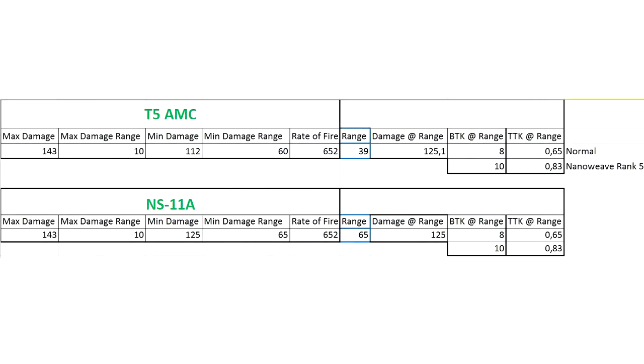For example, these stats show that T5 AMC precision carbine at 39m is as weak as an S11A precision assault rifle at 65m or further.